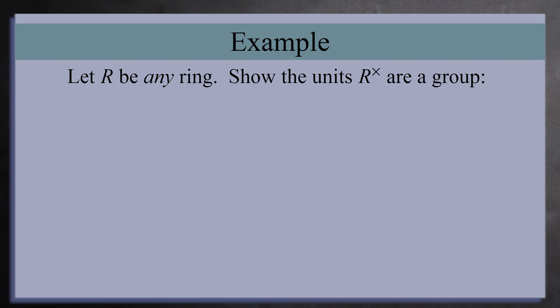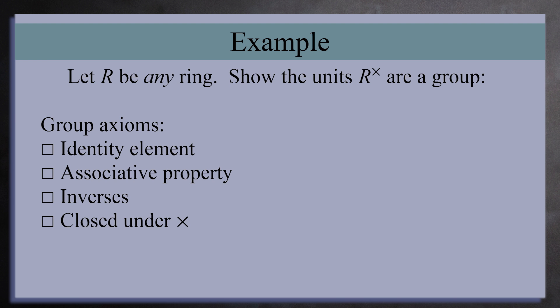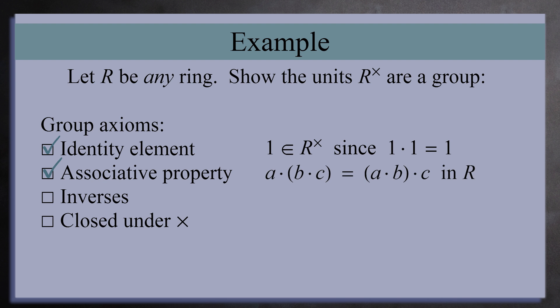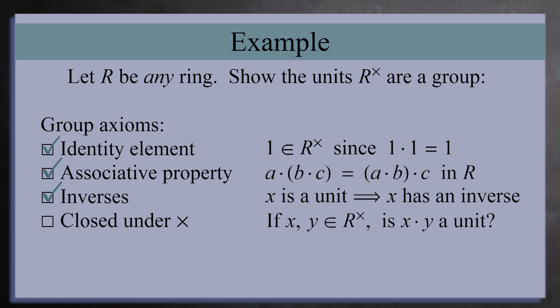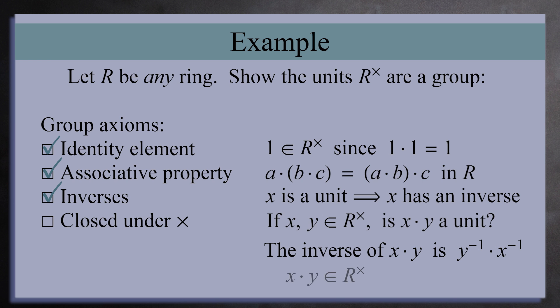Now that we've seen a couple of examples, let's talk about the units more generally. In the previous examples, we saw that the units form a group under multiplication. Let's now see why this is always true. Let R be any ring. The set of units contains the identity element 1, since 1 is its own inverse under multiplication. We inherit associativity from the ring R. By definition, every element x in this set has an inverse y. This leaves closure: if x and y are elements in this set, is their product also in the set? Indeed it is — the inverse of x times y is y-inverse times x-inverse. Since x times y has an inverse, it must also be in the set of units, so we have closure. This shows the units do indeed form a group under multiplication.